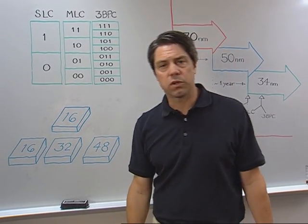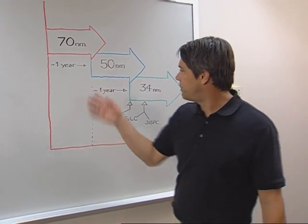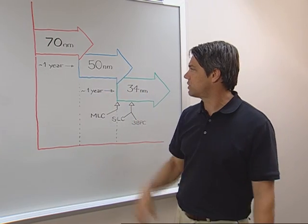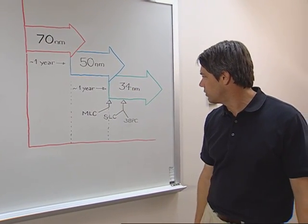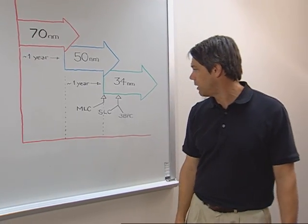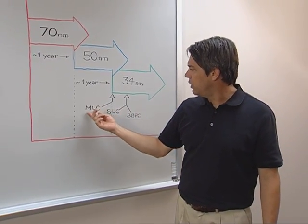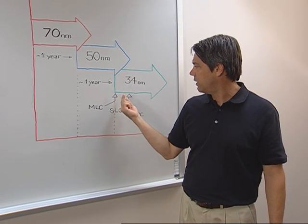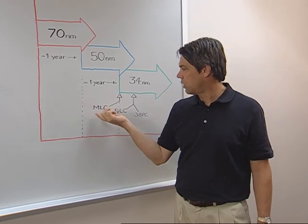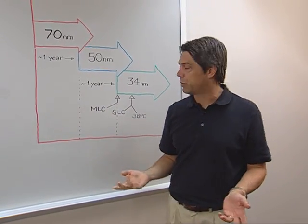Now let's talk about the implications on our NAND roadmap. And what we've depicted here are the last several process nodes that Micron has had and our 34 nanometer, which is our state-of-the-art process node today. And it's important to note that when we start manufacturing on a new process node, we start with MLC. And that's because it's the high-volume product. It goes into the most applications.